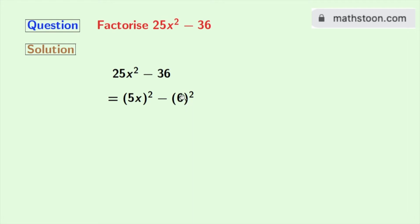So we get (5x)² - (6)². Now look that this is in the form of a² - b², where a is 5x and b is 6. So we can now apply the formula of a² - b² in this expression.